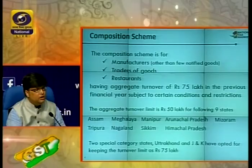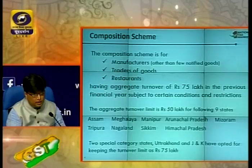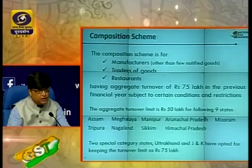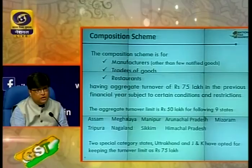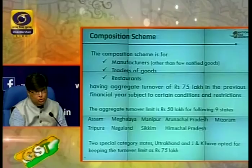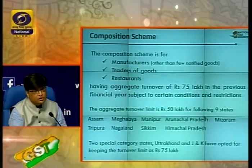As far as special category states are concerned, there are 11 of them. For 9 of them — Assam, Meghalaya, Manipur, Arunachal Pradesh, Mizoram, Tripura, Nagaland, Sikkim, and Himachal Pradesh — the composition threshold limit is 50 lakhs. Two special category states, Uttarakhand and J&K, have opted to keep the composition scheme threshold at 75 lakhs.